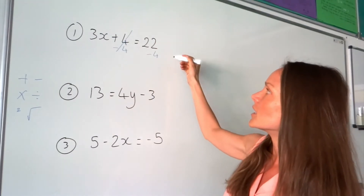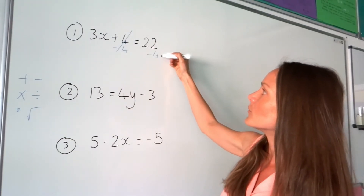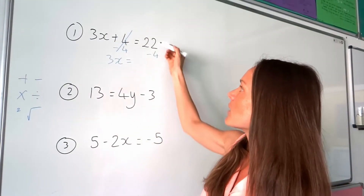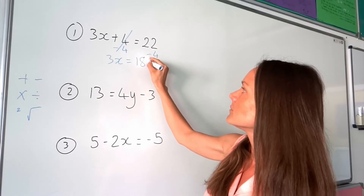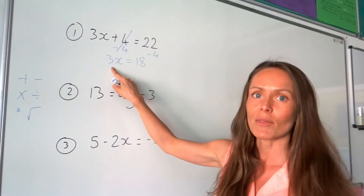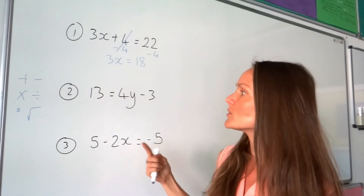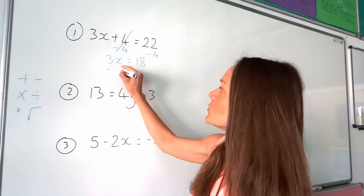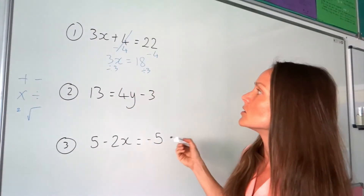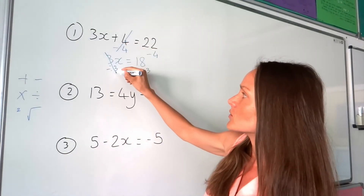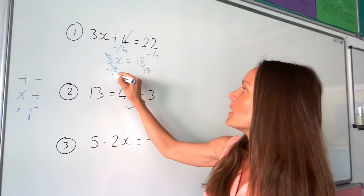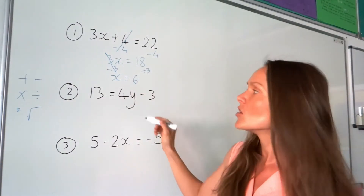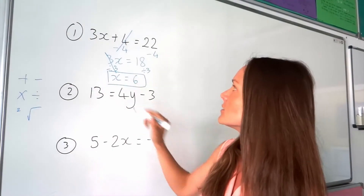On the right-hand side, we have to calculate. So 22 take away 4 is 18, and I've got 3x left over on the left. On the right-hand side, I now have 18. x is currently being multiplied by 3, so the opposite of multiply is divide — I need to divide by 3, doing the same thing on both sides. Where we do the opposite, that cancels, because 3 divided by 3 is just 1. So I'm left with 1x, and on the right-hand side, 18 divided by 3 is 6. So we've solved our first equation.